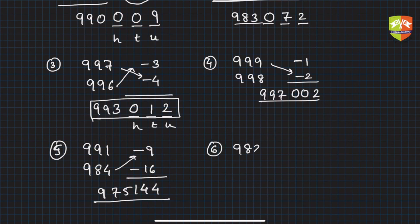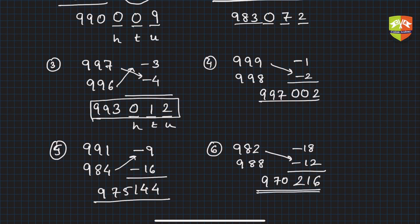Let's take another one: 982 × 988. The only thing is you want to be thorough with tables up to at least 20—that will make it much faster. This is -18 and this is -12 away from 1000. Now 18 × 12: if you don't know it's 216, you can do 18 × 10 which is 180 plus 36, that's 216. Three digits are already available, so I don't need to do anything. Now 982 - 12 is 970. So this is the product.